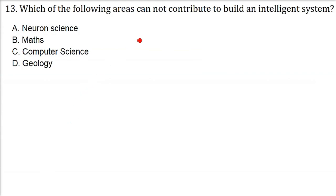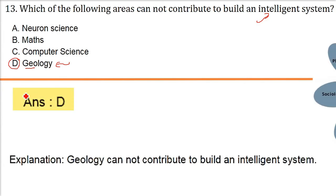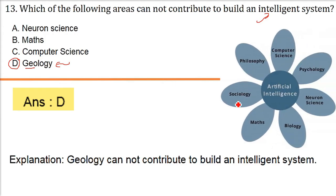Which of the following areas cannot contribute to build an intelligent system? In order to make an intelligent system, you need neuroscience, you need math, you need computer science. But geology, geology is all about rock, soil, different, you know, geo means earth. So how this, you can apply AI in geology, but geology will make an intelligent system without it. So geology cannot contribute to build an intelligent system. We right now don't think so. Maths is very important.